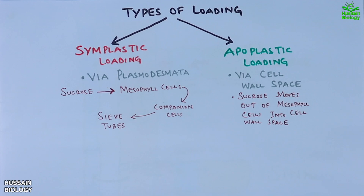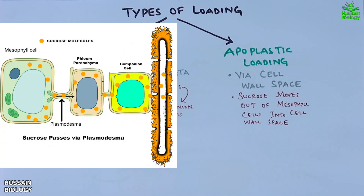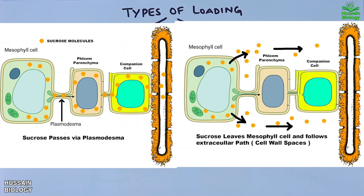In this diagram, on the left we can see the symplastic loading — the mesophyll cells contain sucrose molecules, which follow a path via plasmodesmata, transported to phloem parenchyma, then to companion cells, and finally to sieve tubes. On the right we have the apoplastic pathway, where sucrose molecules within mesophyll cells are sent out into the extracellular space within the cell wall spaces, then follow a path through these spaces and finally reach the sieve tubes.